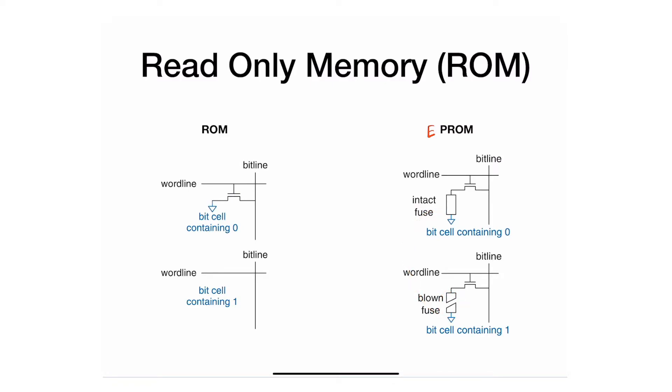The way you do it is by putting it under UV light for half an hour or a certain period of time, which is very slow by today's standards. Then you have a blank ROM again. This is why it's called erasable: you can erase it and rewrite over it by blowing other fuses.